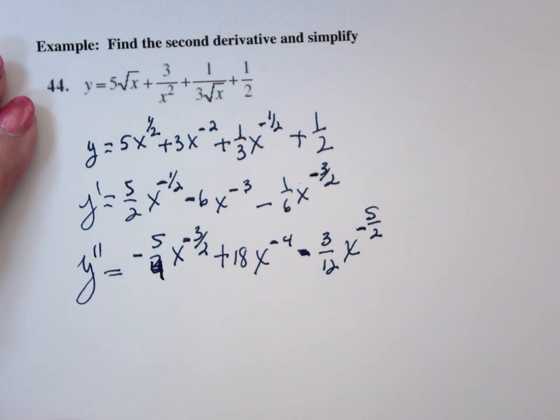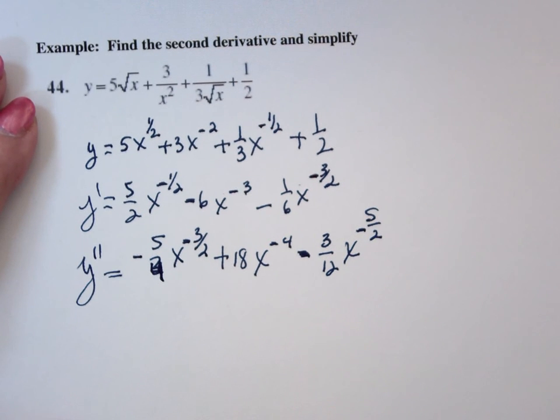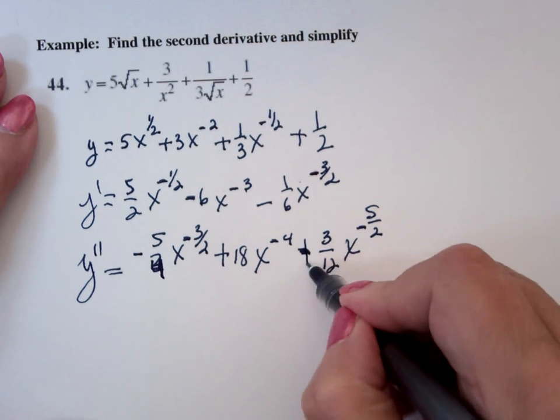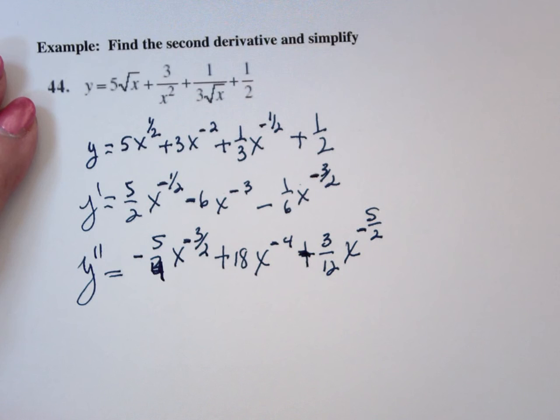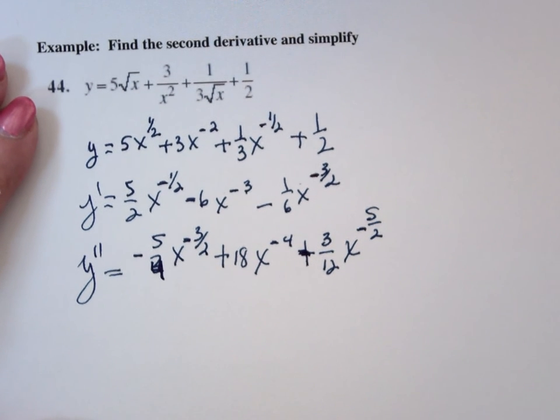We need to rewrite that. Wouldn't the 3/12 be a plus 3/12? Oh yeah, that would be a plus, because 3/12 is also what? 1/4. So if I wanted to simplify that, I could.